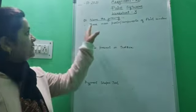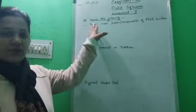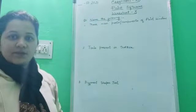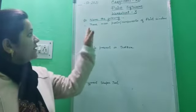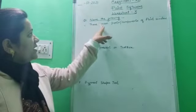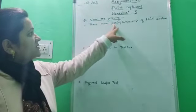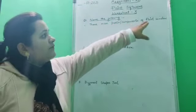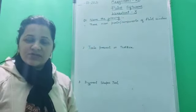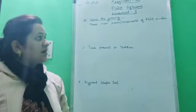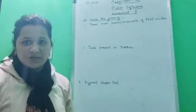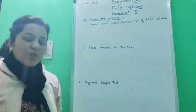So children, here is the first question: name the following. The question is: three main parts or components of paint window. You all have studied this chapter. We have discussed about the different parts or components of paint window. So what are they?